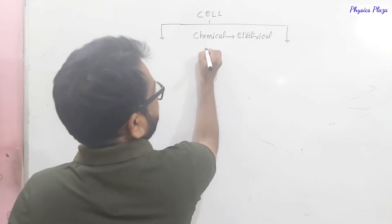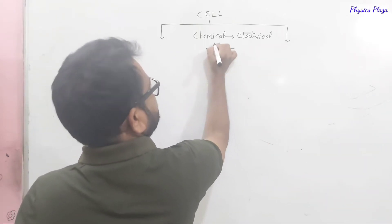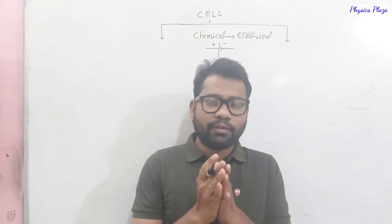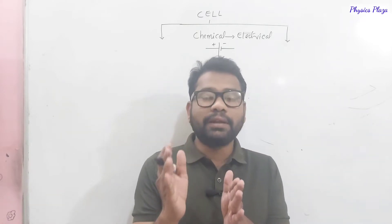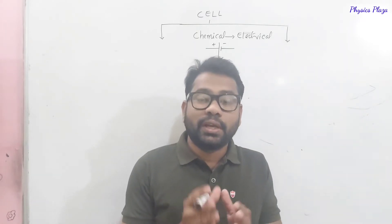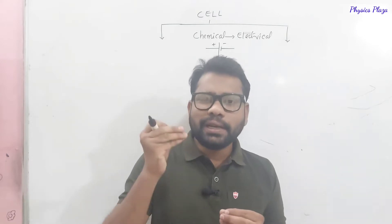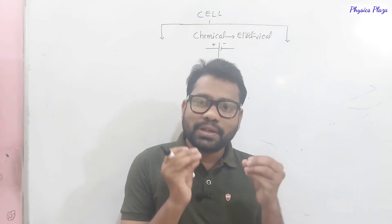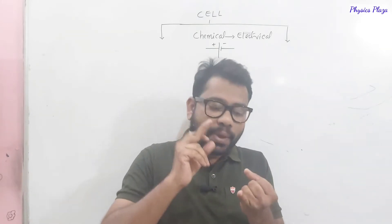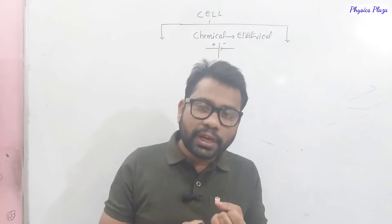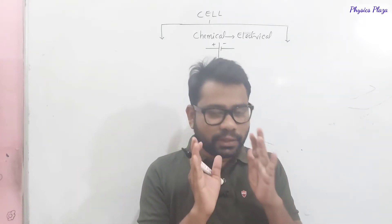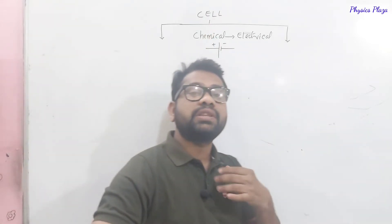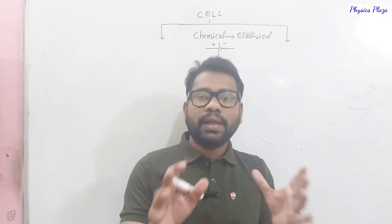The symbol of a cell shows a plus and minus. It always sends current from the positive terminal to the negative terminal only, so there is no change in direction. The magnitude of current remains constant and direction is always from positive to negative — that is what we call direct current. The source of direct current is the cell, which converts chemical energy into electrical energy.